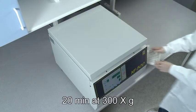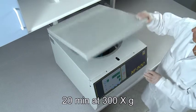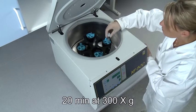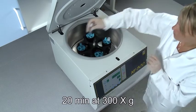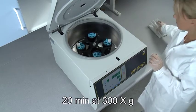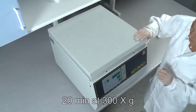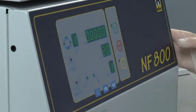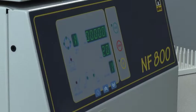Spin for 20 minutes at 300 times G in a centrifuge with a swing-out rotor. Do not use the brake. Be sure to calculate the correct rpm to give 300 G in your centrifuge by measuring the radius of the centrifuge rotor. Then use the equation found in the product manual on our website.